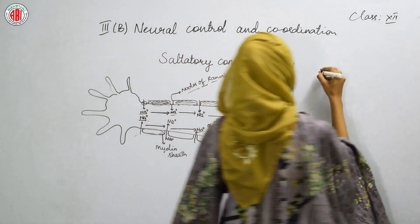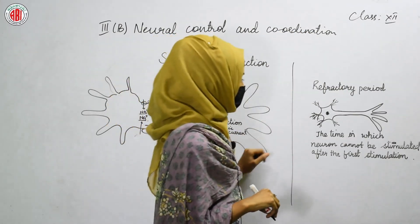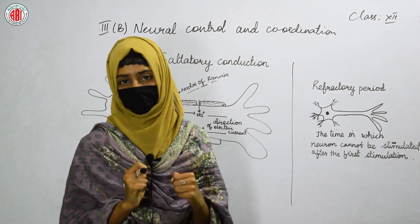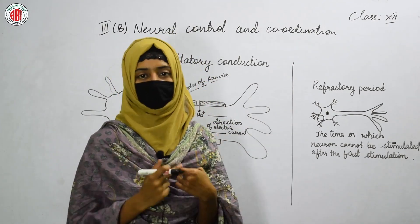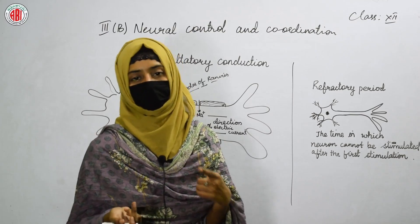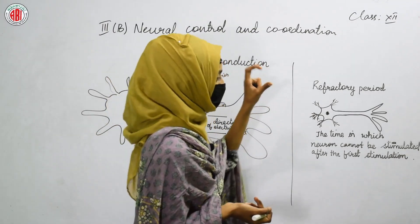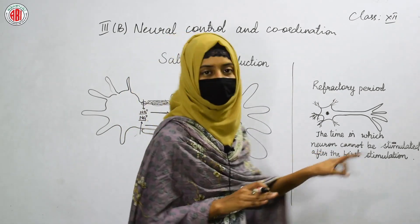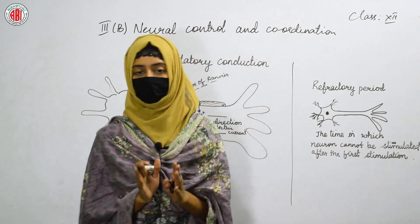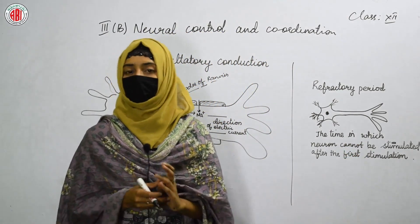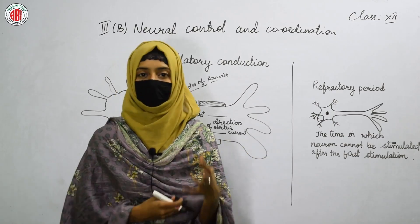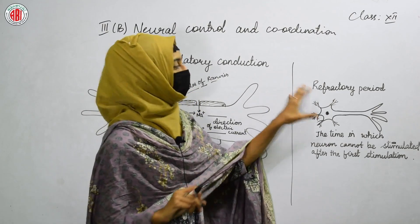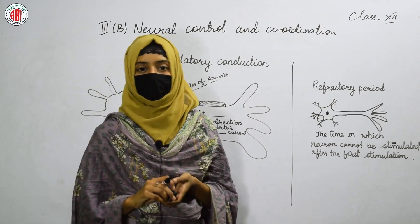The next topic is the refractory period. When a neuron receives the first stimulation, after the first stimulation it will go into a resting phase. The refractory period is a time period in which neurons cannot be stimulated after the first stimulation. It is the resting period of the neuron — when it is not going to send any signal, when it is at rest after the first stimulation, that period is termed as refractory period.